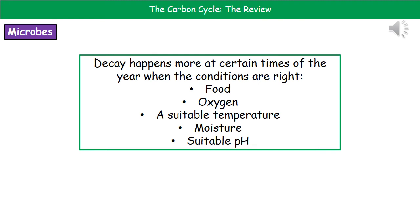Since we're talking about living things carrying out this process of decay, what we find is that decay happens more at certain times in the year, and that's all down to when the conditions are most suited to our microbes. The microbes need a ready available supply of food — things like autumn provide large amounts of dead material as the leaves fall off the trees. They need oxygen, a suitable temperature (not too hot, not too cold), a certain amount of moisture, and a suitable pH to actually function at. If all of those conditions are right, then we see a very rapid rate of decay, because the microbes are able to work at their fastest rate.